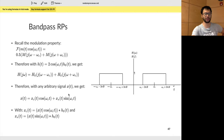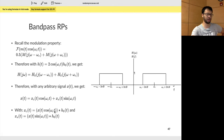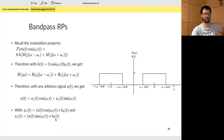Therefore, with any arbitrary signal x(t), the system applies a bandpass filter. You can represent it as xc(t) — take your signal, multiply by cosine, apply an LPF, then multiply by cosine again — plus xs(t) — take your signal, multiply by sine, apply an LPF, then multiply by sine again — and that gives you a bandpass filter.